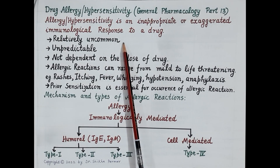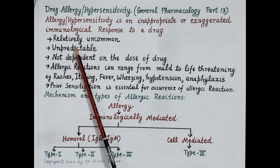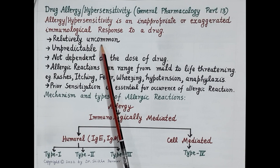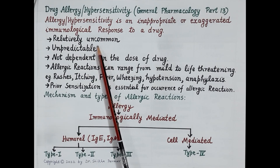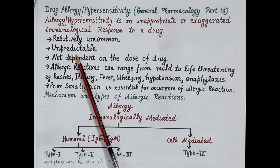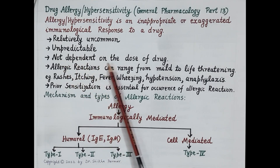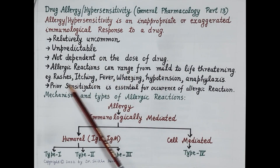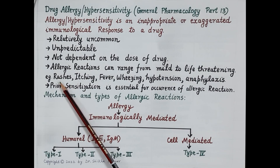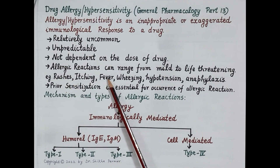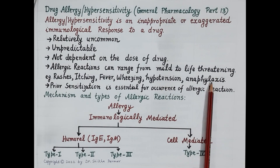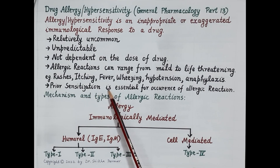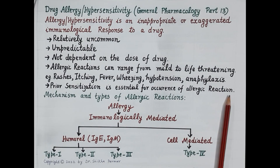Allergic reactions are relatively uncommon and occur only in a small percentage of the population consuming the drug. Allergic reactions are highly unpredictable and cannot be predicted from the pharmacology of the drug. These reactions generally occur even with very small doses and are not dependent on the dose of the drug. Allergic reactions can range from mild symptoms like rashes, itching, fever, wheezing, and hypertension, to life-threatening reactions like anaphylaxis. Very importantly, previous exposure or prior sensitization to the drug is essential for the occurrence of an allergic reaction.